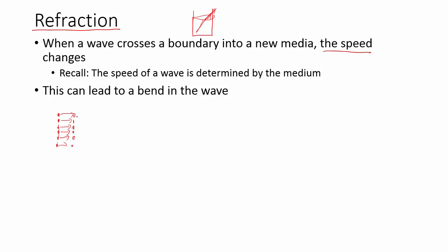To understand refraction, think of it in terms of people. Imagine a bunch of people holding hands — top-down view — all walking forward together. They're all going to go straight, and a little while later everybody is still in a line. This is like a wave moving through some material. Now if this is people walking on a concrete sidewalk and they get to the grass, or maybe they're walking across a beach and reach the water, the wave behavior changes when they hit the boundary at an angle.